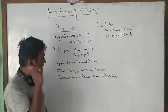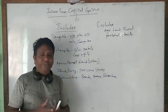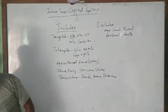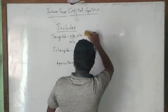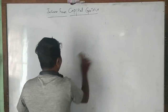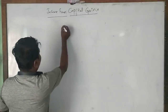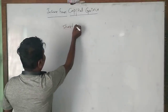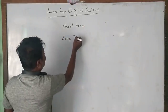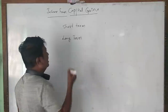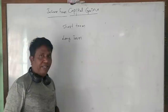Now let us understand how many types of capital gains there are. There are two types of capital gains: one is short-term capital gain and another one is long-term capital gain.